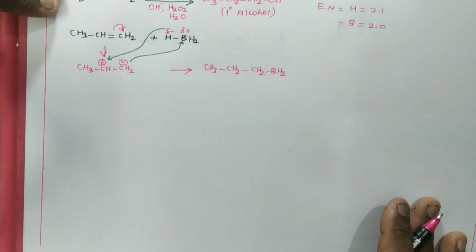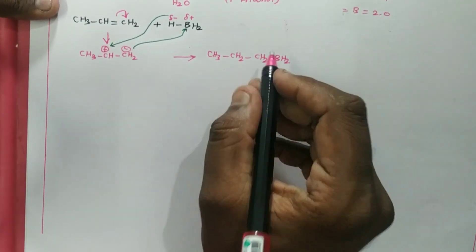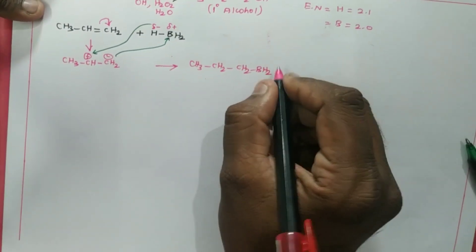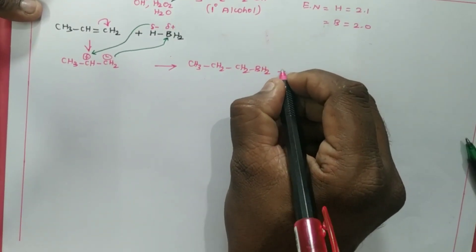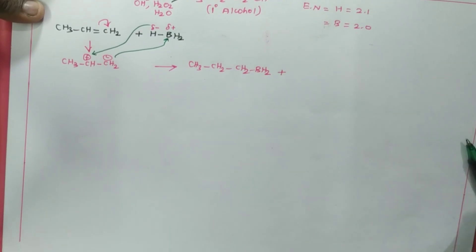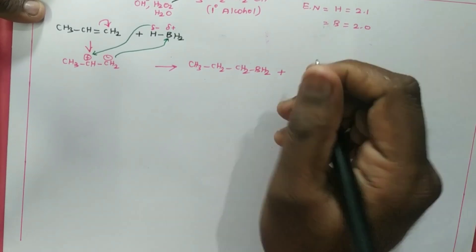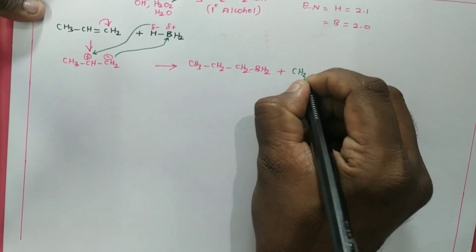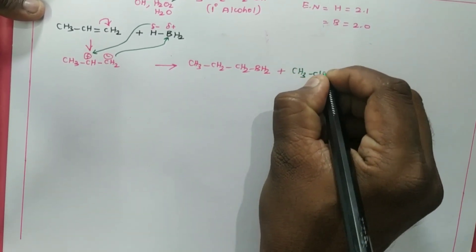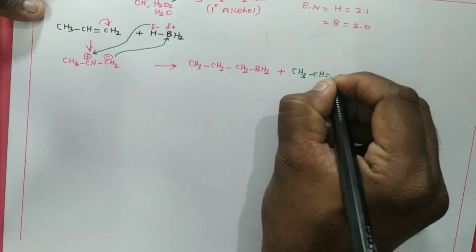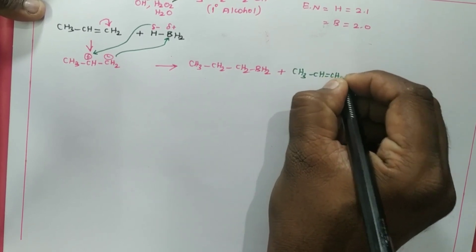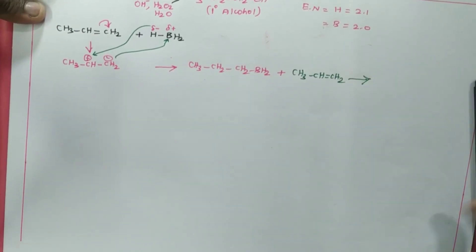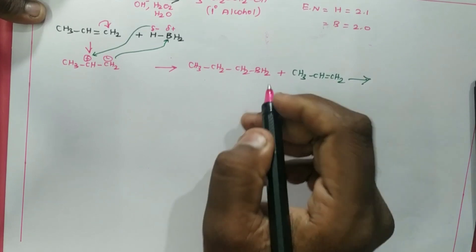This product is then going to react with another molecule — a second alkene molecule, CH3-CH=CH2 — and the same process will occur.